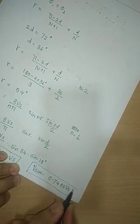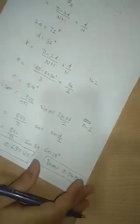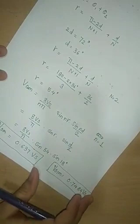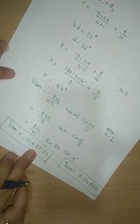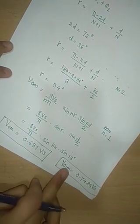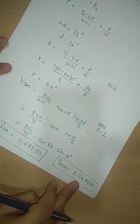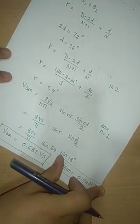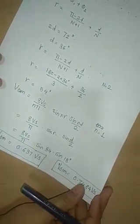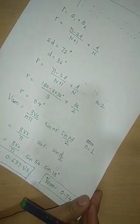In single pulse modulation it is observed that Vom = 0.7484 Vs. So the amplitude of the fundamental component is decreased in case of multiple pulse modulation. We can say the fundamental component of output voltage is lower — 0.637 Vs in case of multiple pulse (two pulse) modulation — as compared to single pulse modulation where it is 0.7484 Vs. For large values of pulses per half cycle, the amplitude of lower order harmonics gets reduced but those of some higher order harmonics gets increased.